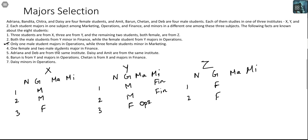One female and 2 male students major in Operations. Now if 2 male students major in Finance — it cannot be the 2 males from Y, because they are minoring in Finance. So whichever males are in X are definitely majoring in Finance. One female who is majoring in Finance is not from Y; she could be from X or Z. So this portion is still left — I will take care of it later.